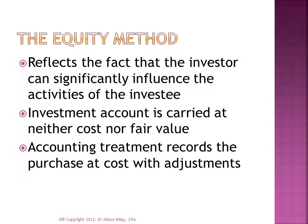US GAAP requires investors to use the equity method for accounting for investment in an investee where the investor has the ability to exert significant influence over the operating and financial decisions of the investee. Significant influence is assumed to be present if the investor owns 20% or more of the outstanding voting stock of the investee. Influence arises from the investor's ability to participate in the voting rights of shareholders. Even in the absence of sufficient ownership, there may be other factors that give the investor significant influence — one example would be if the two companies have common management. A curious feature of the equity method is that the investment account is carried on the investor's books at neither cost nor fair value.